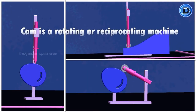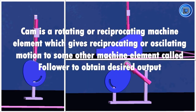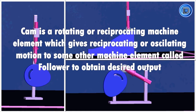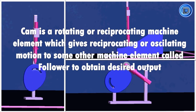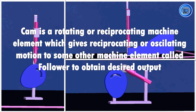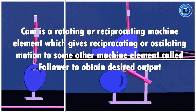So the Cam is a rotating or reciprocating machine element, which gives reciprocating or oscillating motion to some other machine element called the Follower, to obtain a desired output. The cams are rotated at uniform speed by a shaft. The motion of the follower is determined by the shape of the cam.